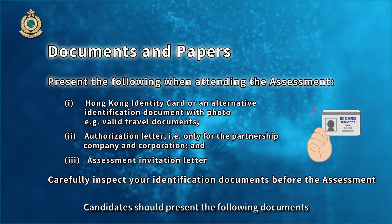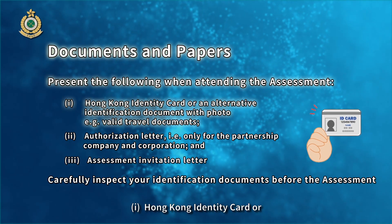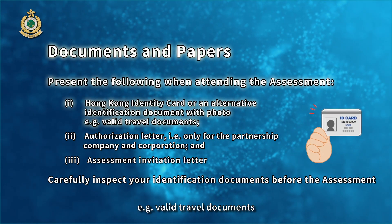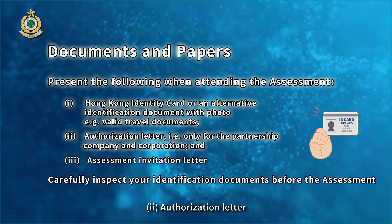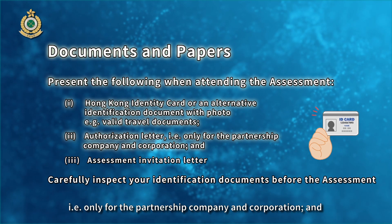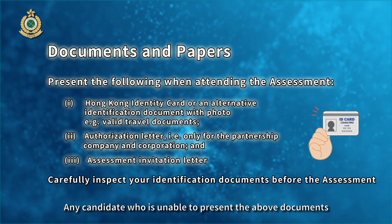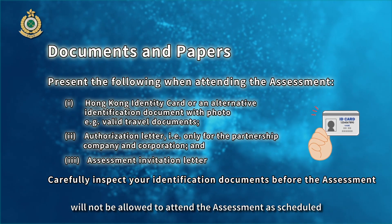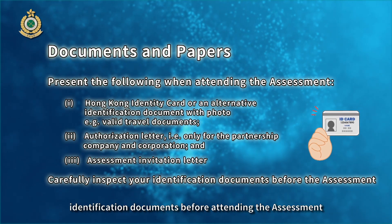Candidates should present the following documents for inspection when attending the assessment: 1. a Hong Kong identity card or an alternative identification document with photo, for example, valid travel documents; 2. an authorization letter, which is only required for partnership companies and corporations; and 3. the assessment invitation letter. Any candidate who is unable to present the above documents will not be allowed to attend the assessment as scheduled. Candidates are advised to carefully inspect their identification documents before attending.